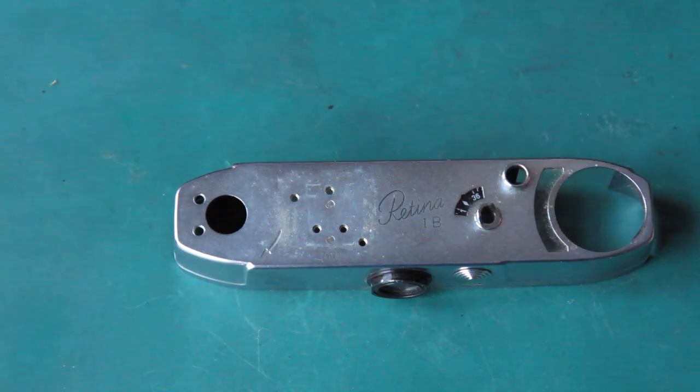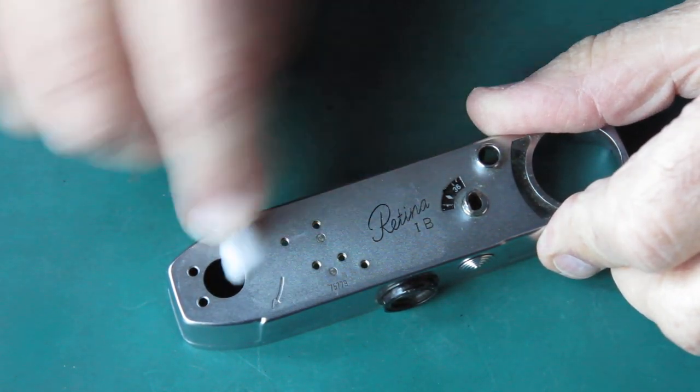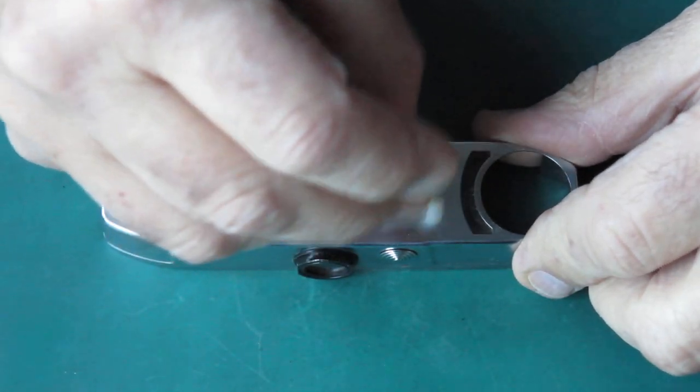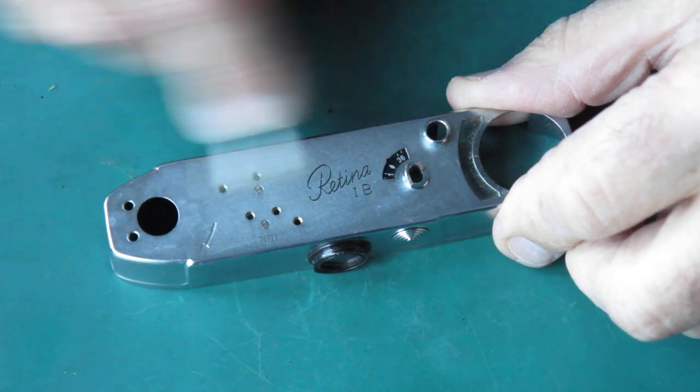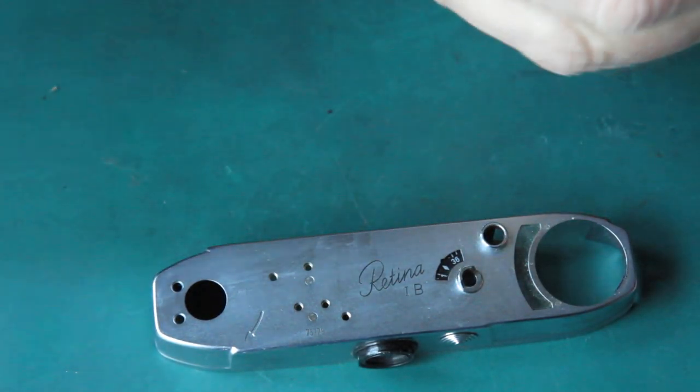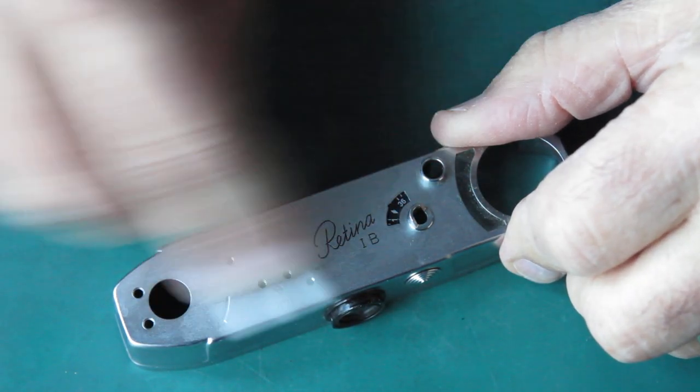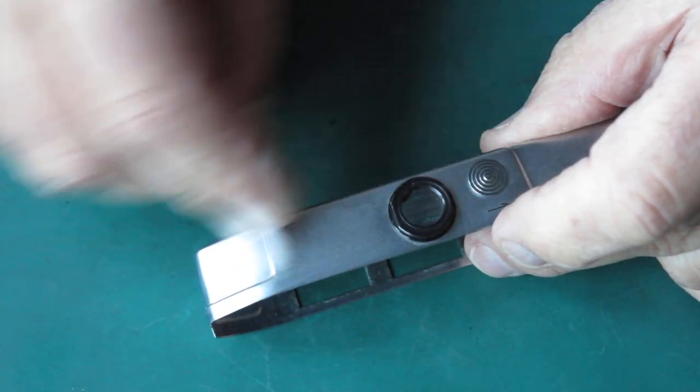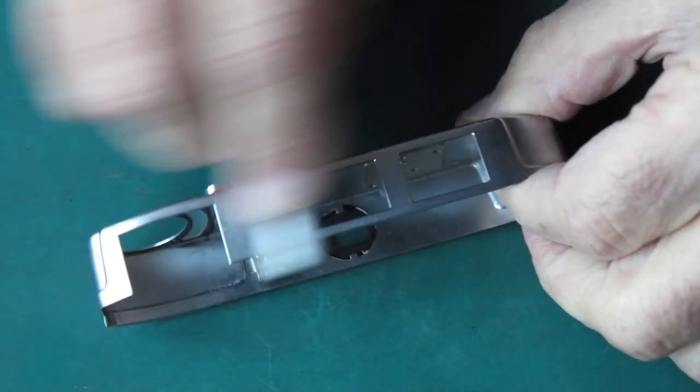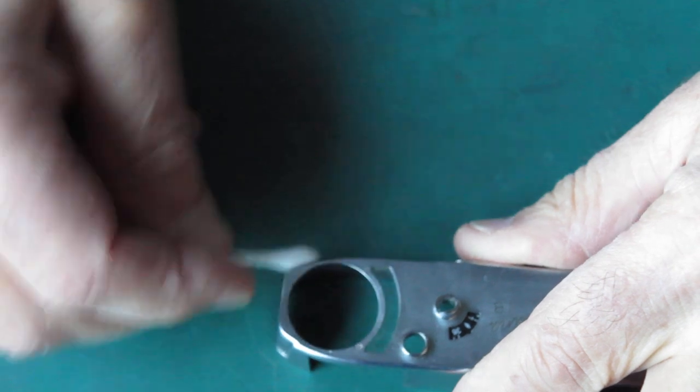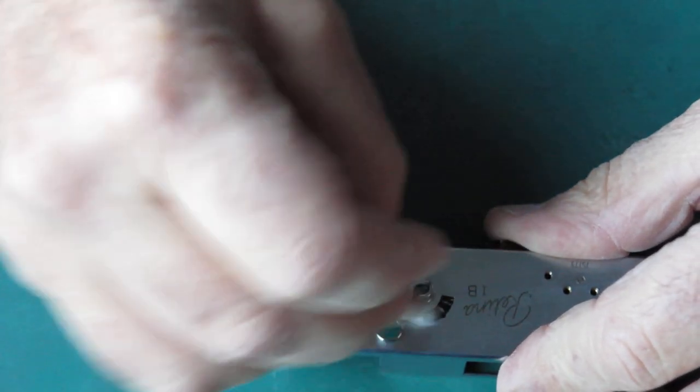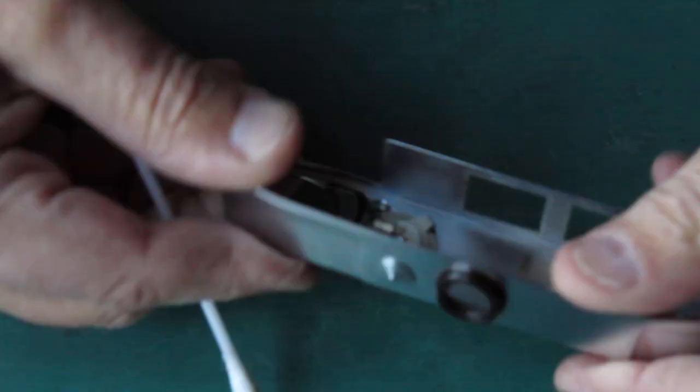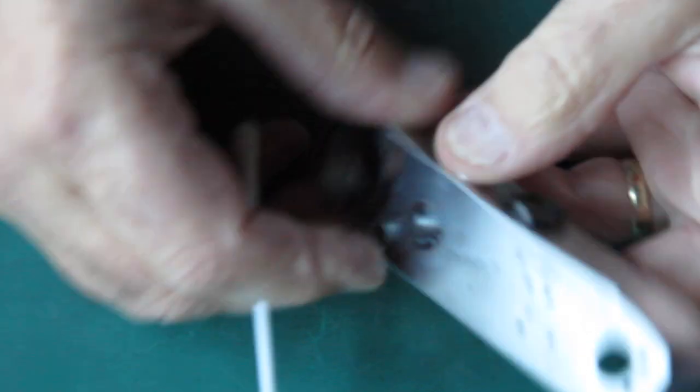Next job, clean up this top cover. I'm just using naphtha here. Be careful not to get it on the window there. There's a fair bit of dirt coming off but it's looking in pretty good condition. The frame counter numbers are often grimy. There's no return spring on here at the moment, so I'm going to have to work that lever by hand.